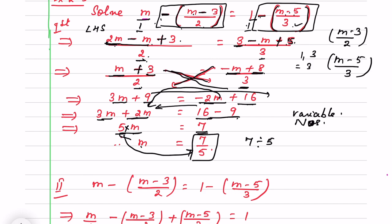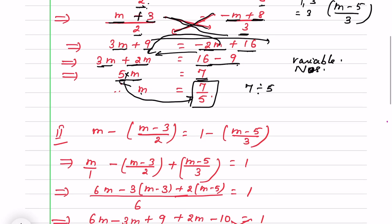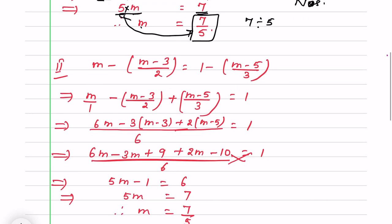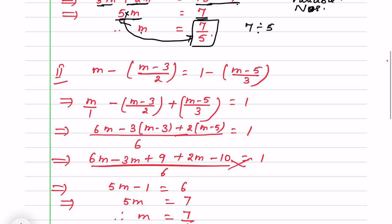Now I explain another method. If you are not comfortable with the previous method, you can solve by this one — it is the same question. This time I bring (m minus 5) by 3 to the left-hand side, because all variable-containing terms go to the left and only the digit 1 remains on the right. The LCM of 1, 2, and 3 is 6.